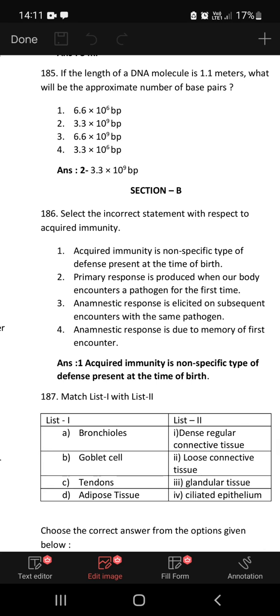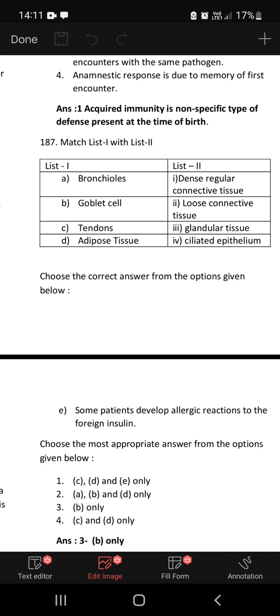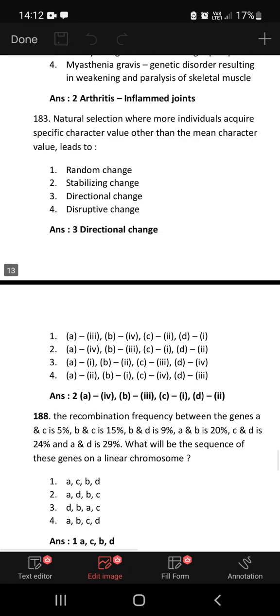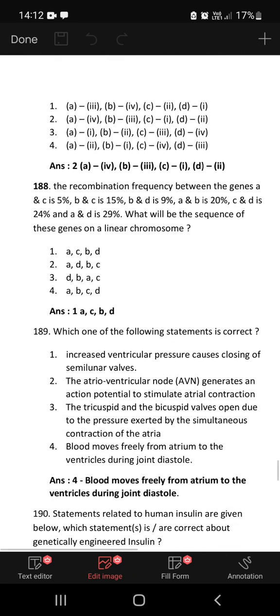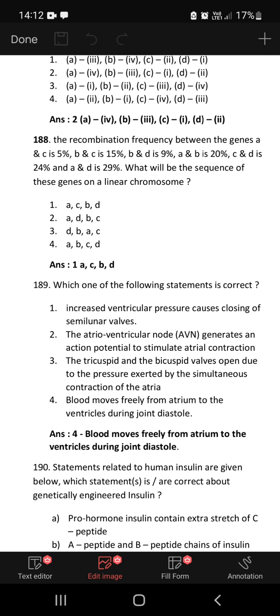Select the incorrect statement with respect to acquired immunity. Acquired immunity is non-specific type of defense present at the time of birth. This is wrong, this is an incorrect statement. Primary response is produced when our body encounters a pathogen for the first time, that is correct. An anamnestic response is elicited on subsequent encounters with the same pathogen, also correct. Match the following: bronchioles have ciliated epithelium, goblet cells are glandular tissue, tendons are dense regular connective tissue, adipose tissue is loose connective tissue. The correct option is A4, B3, C1, D2.